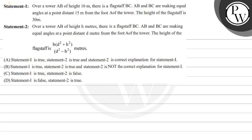Let's read this question. Statement 1: Over a tower AB of height 10 meters, there is a flagstaff BC. AB and BC make equal angles at a point distant 15 meters from foot A of the tower. The height of the flagstaff is 30 meters.